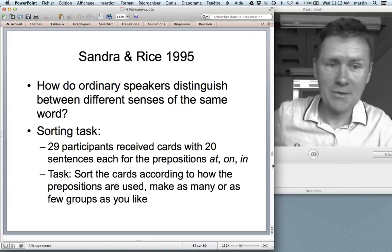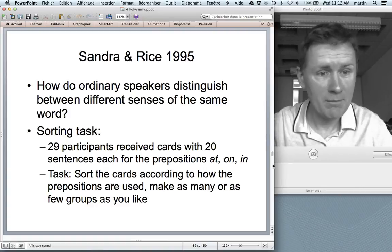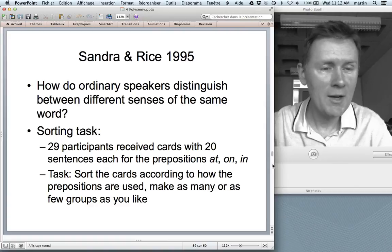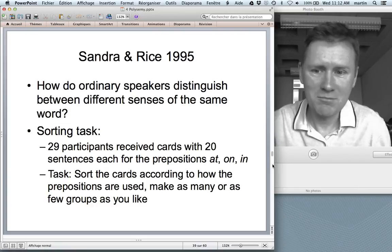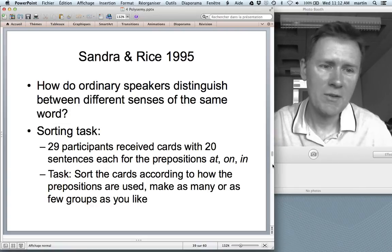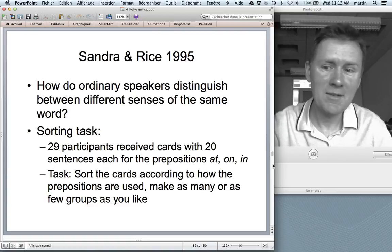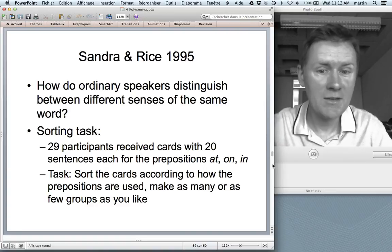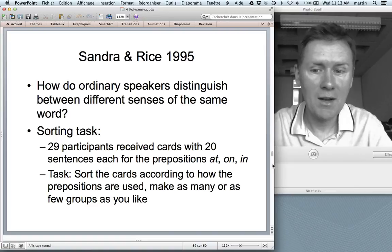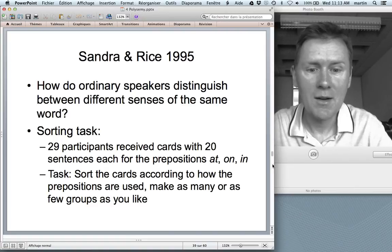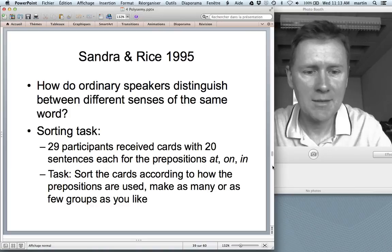There's an empirical paradigm that's used in psycholinguistic research that's called a sorting task. You give people a bunch of stuff and you tell them, okay, here's a collection of things. Why don't you sort these things into categories that belong together? You can choose as many categories as you like, or sometimes you're restricted to make two piles or make three piles or make four piles. In this case, there were some 29 participants who received cards with 20 sentences each for the prepositions at, on and in. So different sentences with these prepositions. And the task was to sort the cards according to how the prepositions are used.